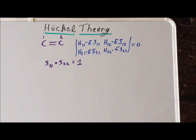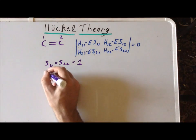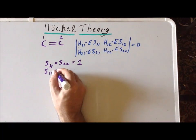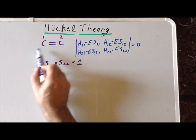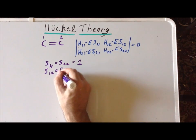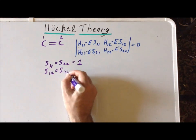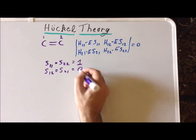Within the Hückel system, we otherwise neglect overlap. So S₁₂, the overlap between atoms 1 and 2, is the same by symmetry as S₂₁. And we set this to be 0. We call this neglect of overlap.